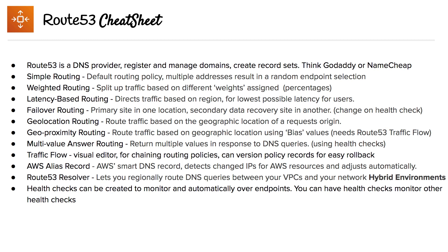You have geolocation routing, which routes traffic based on geolocation — for example, North America or Asia. Then you have geo proximity routing, which can only be done in Traffic Flow, and allows you to set biases — basically a map of boundaries based on the different regions you have.